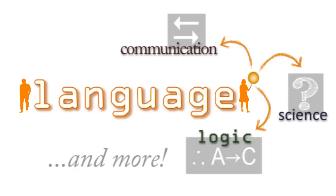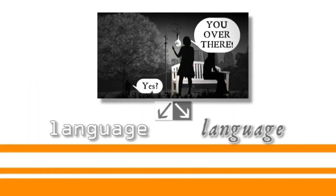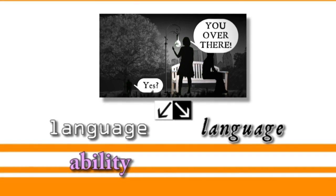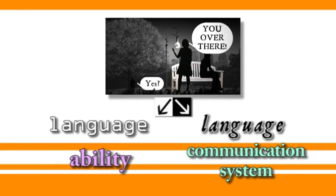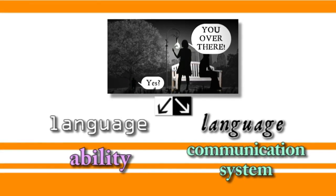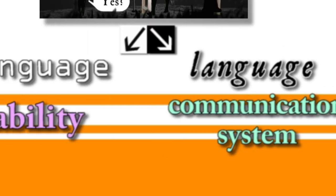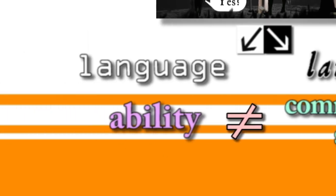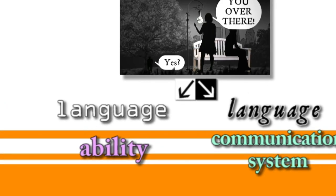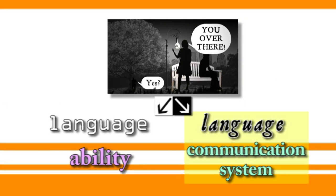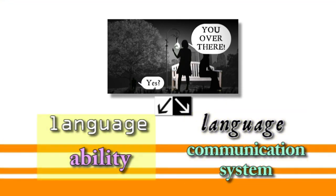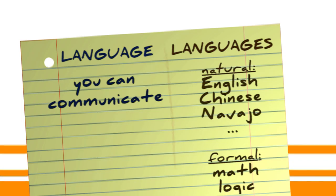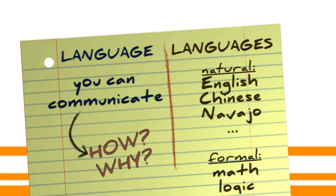They're using that general ability called language, but they're also using a specific language — they're speaking and hearing English. But we don't think that this language, English, is the same thing as this ability to speak and understand. After all, they could be speaking French or Swahili and still be using language. So what is it that sets language apart from all these languages?